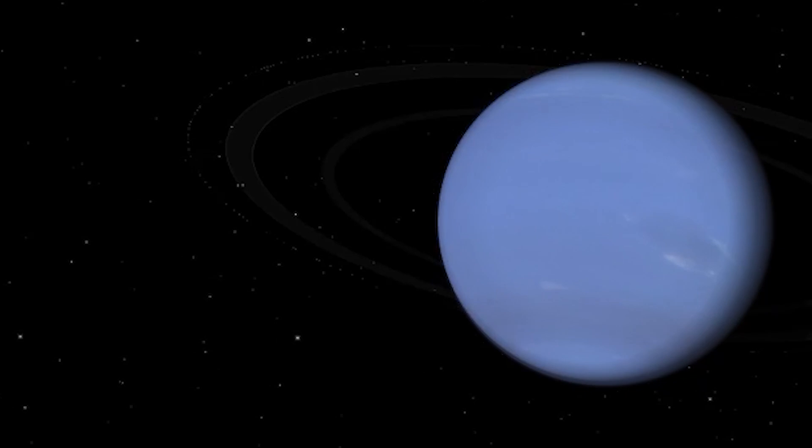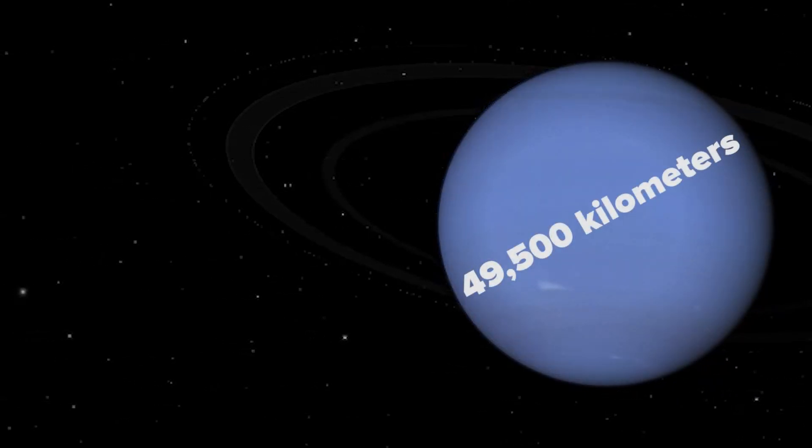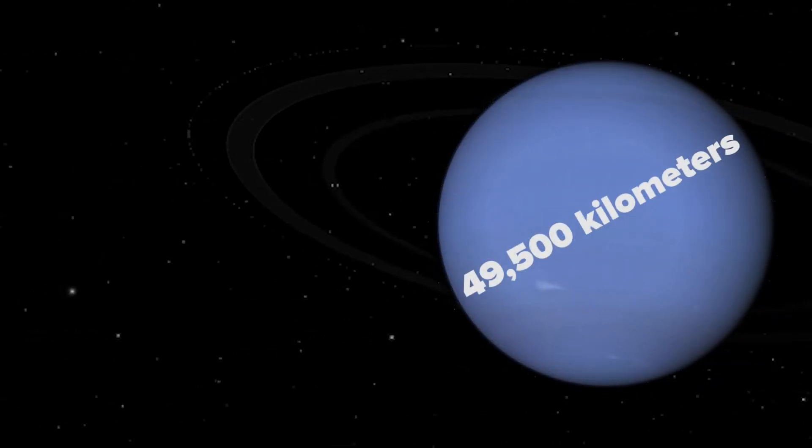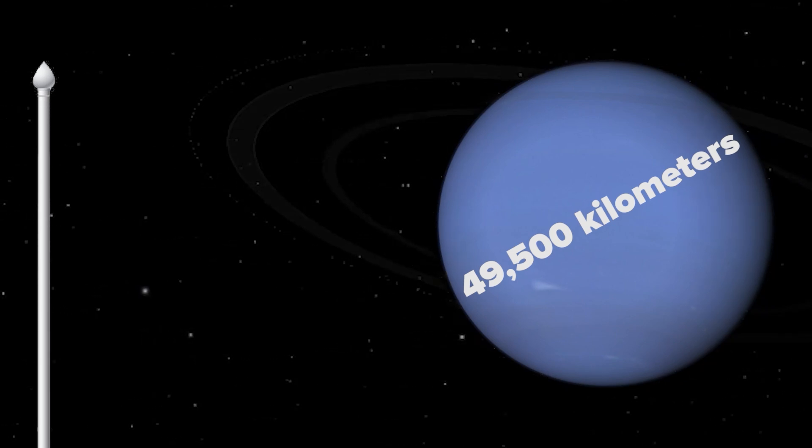Our last planet is about 49,500 kilometers in diameter, making it the fourth largest planet in the solar system. And it's Neptune.